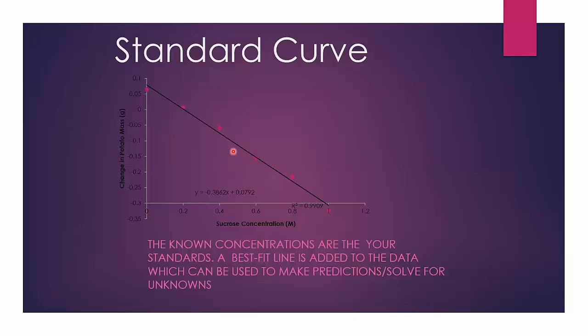So in this case, with the unknown sucrose solution, you will know what the change in mass is. So you'll know y, but you will not know x, which is the sucrose concentration. So you'll solve for x, and determine the unknown concentration.